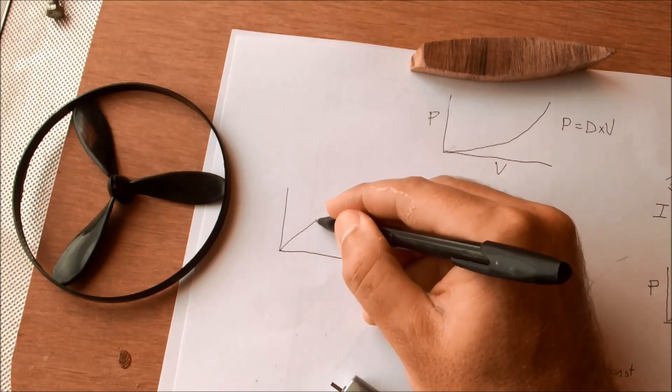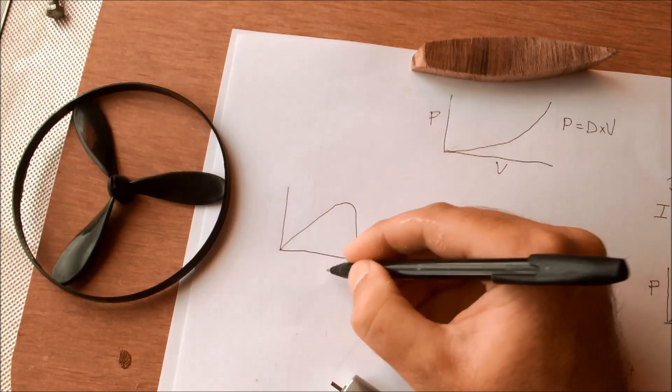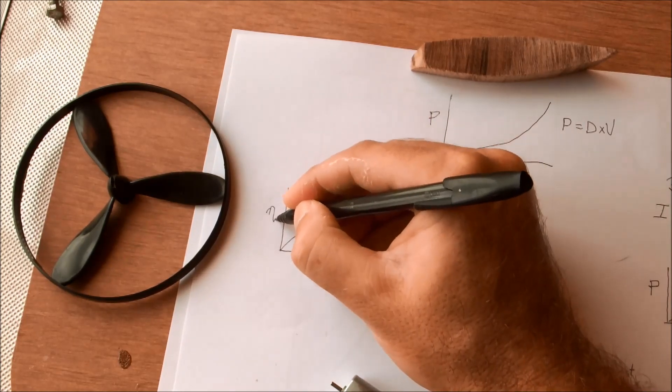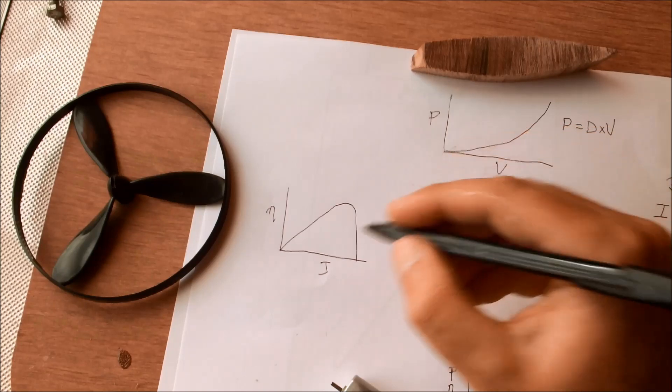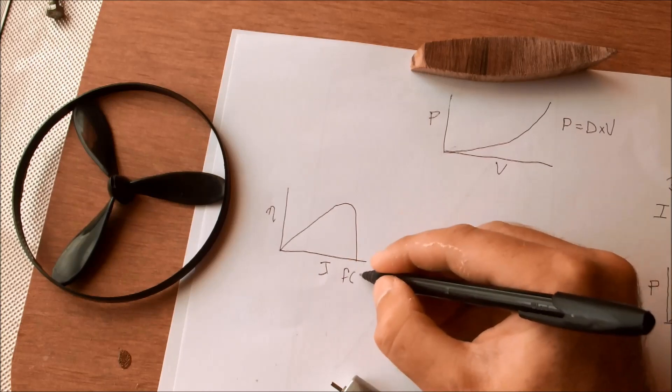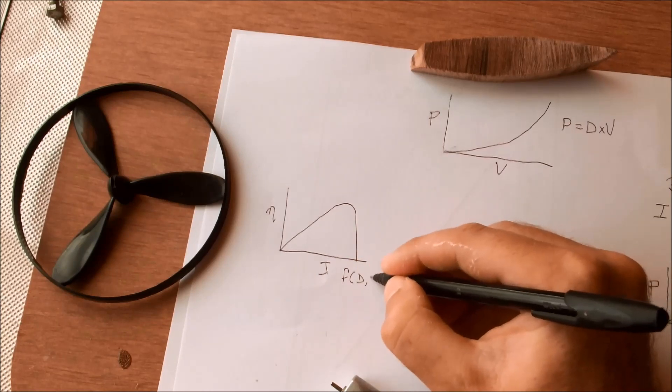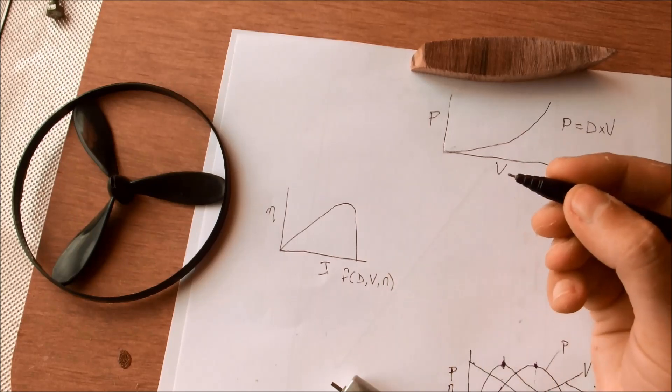If you are lucky enough you would have access to propeller curves that give you the advance ratio with efficiency. The advance ratio is a function of diameter, velocity through the water as well as rotational velocity.